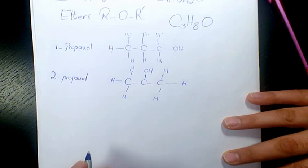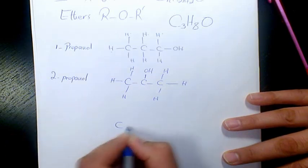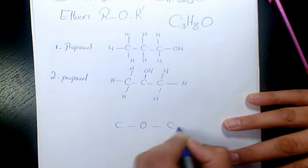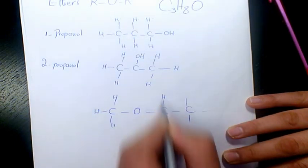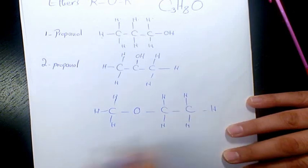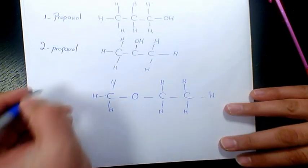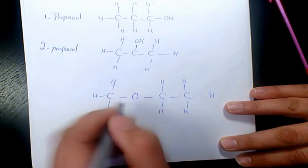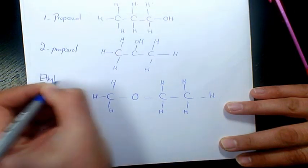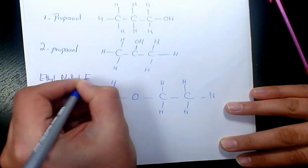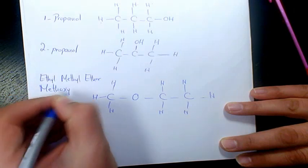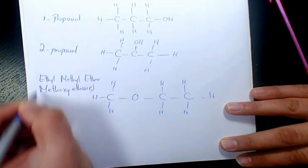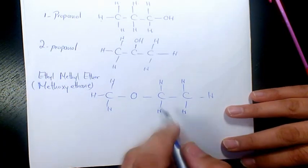The last one can be an ether. For example, we have oxygen with one carbon on this side and two carbons on the other side, with hydrogen atoms filling the remaining bonds. We call it Ethyl Methyl Ether — that's the common name — or methoxyethane, which is the IUPAC name.